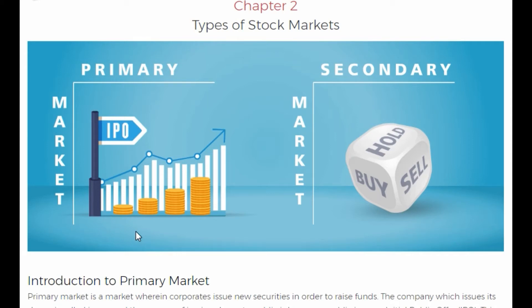Welcome to chapter number two: types of stock markets. Normally there are two types of stock markets — primary market and secondary market.